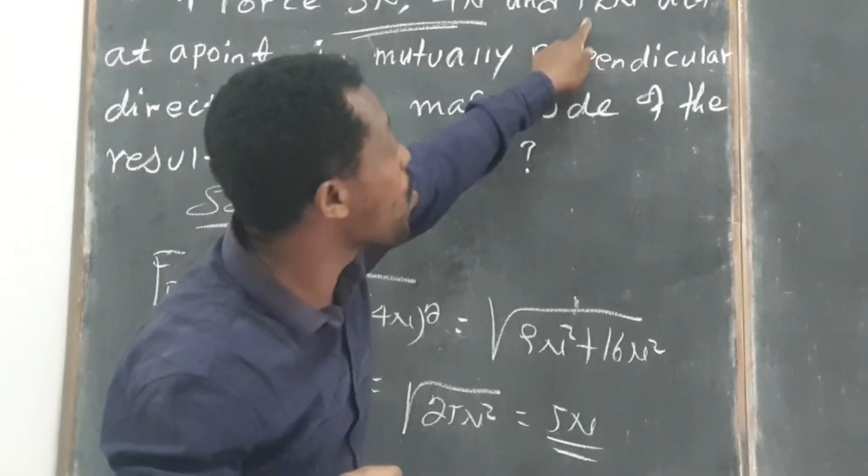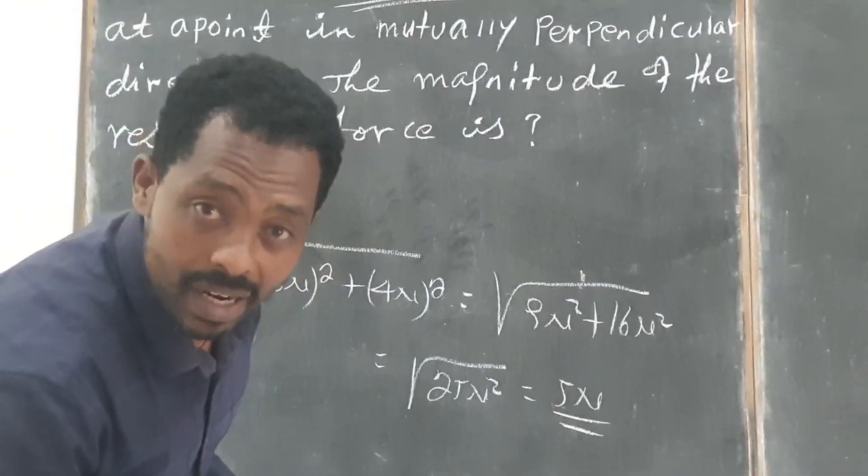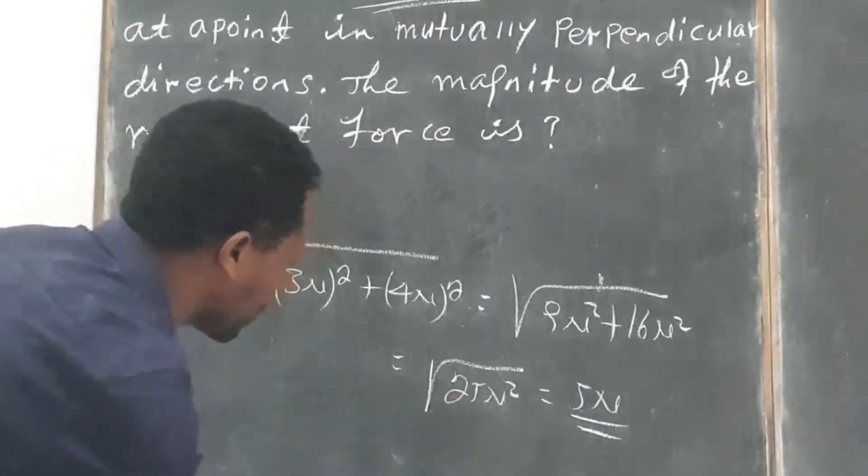Then what we have to do? We have to find the net or the resultant of 12 Newton and 5 Newton. So the same thing all through here.